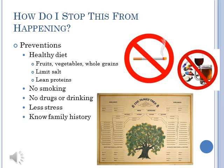To prevent CHD, you should eat a healthy diet of fruits and vegetables, don't smoke or use drugs or drink alcohol, try to limit stress in your life, and know your family history. If there is heart disease in your family or diabetes, take the necessary precautions to limit your chance of getting coronary heart disease.